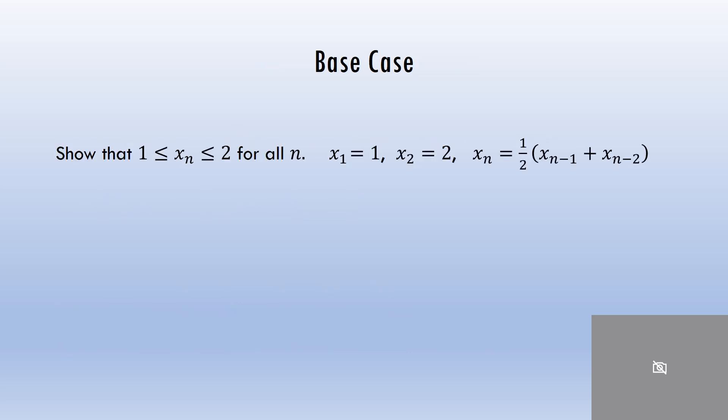In my base case, I show that the statement is true for the first element. Actually, in this example, I need to show that it's true for the first two. Because x sub n in general is dependent on the two numbers before it. I could show that x sub k plus 1 is between 1 and 2 as long as x sub k minus 1 and x sub k minus 2 are between 1 and 2 — but x sub 2 isn't dependent on x sub 1, so it could be a million. Be aware that if your elements are defined differently, you need to show it's true for all unique base cases before moving to the inductive hypothesis.